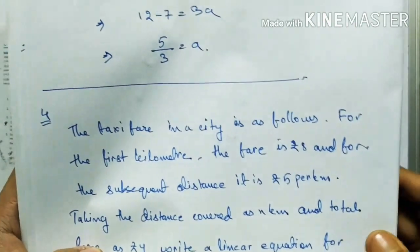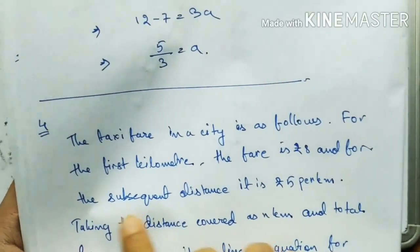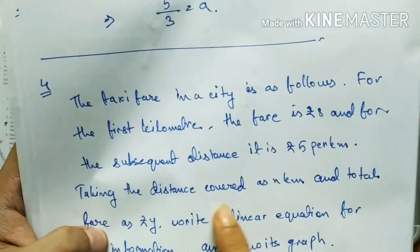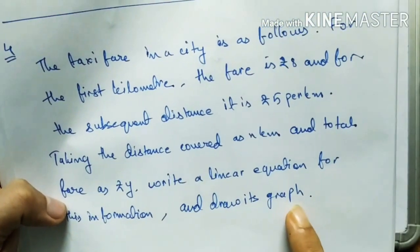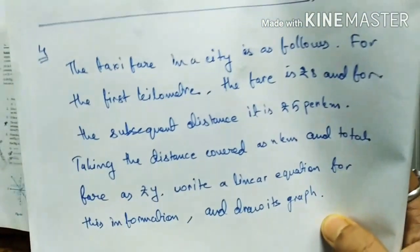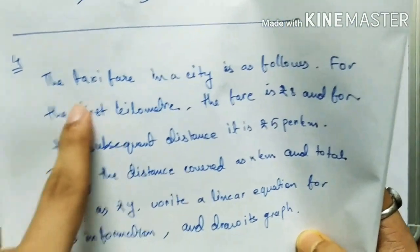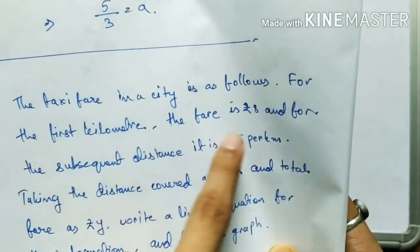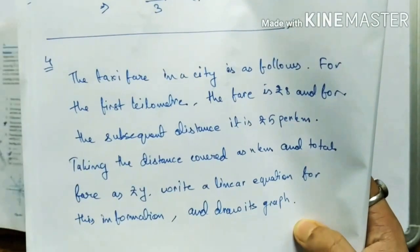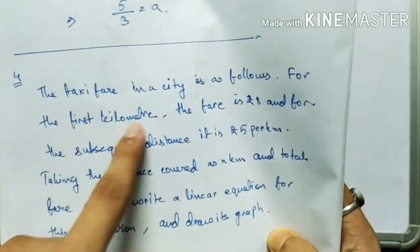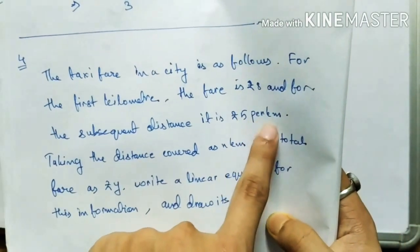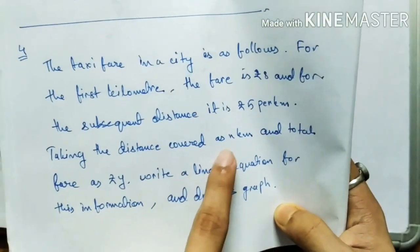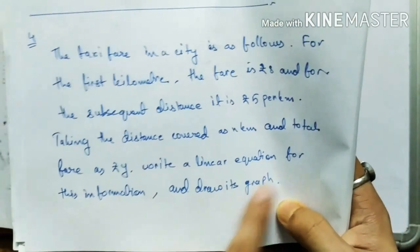Question Number 4: the taxi fare in a city is as follows — for the first kilometer the fare is rupees 8, and for the subsequent distance it is rupees 5 per kilometer. Taking the distance covered as x kilometers and total fare as rupees y, write a linear equation for this information and draw its graph.